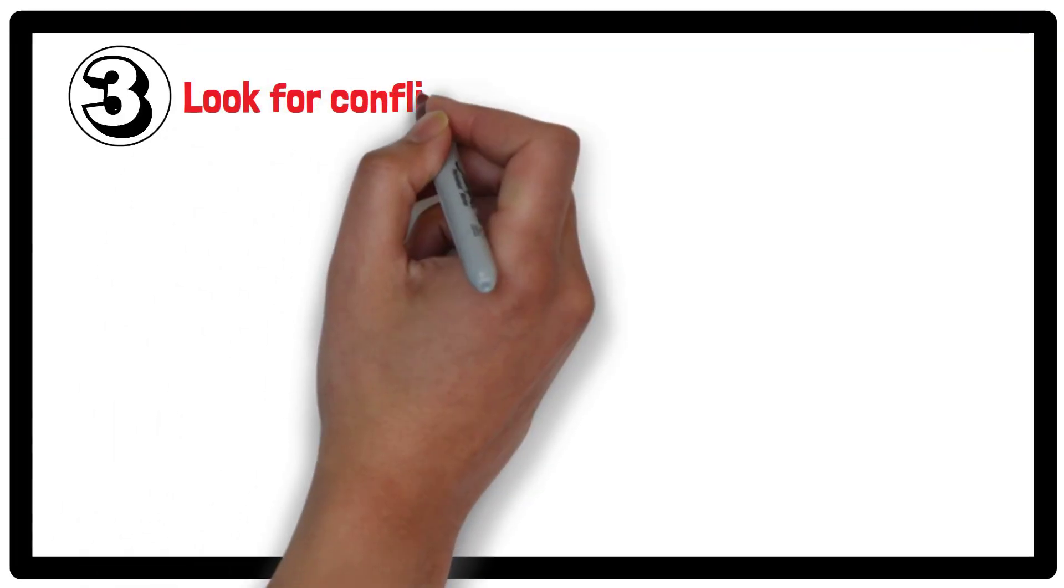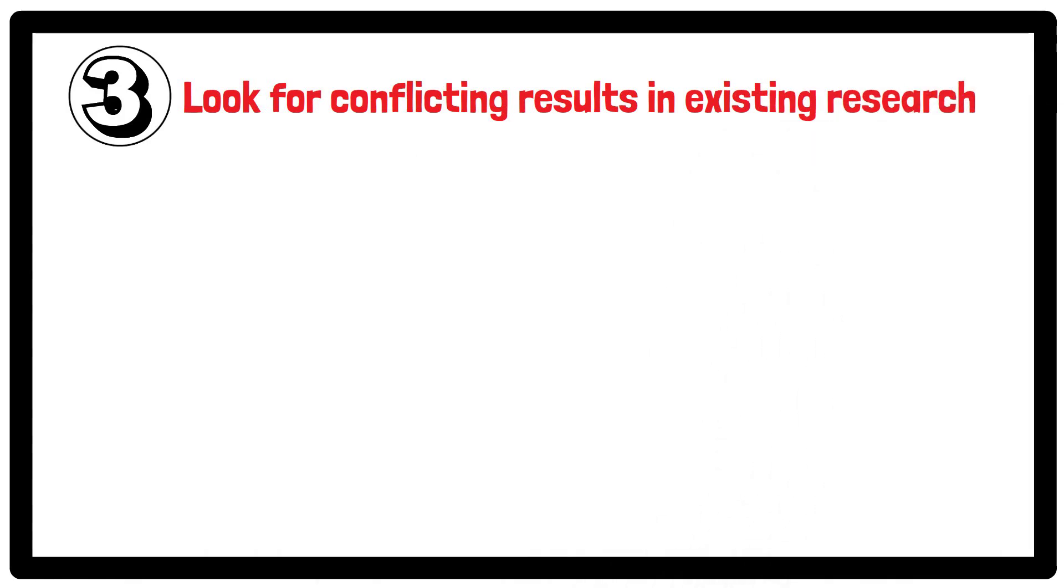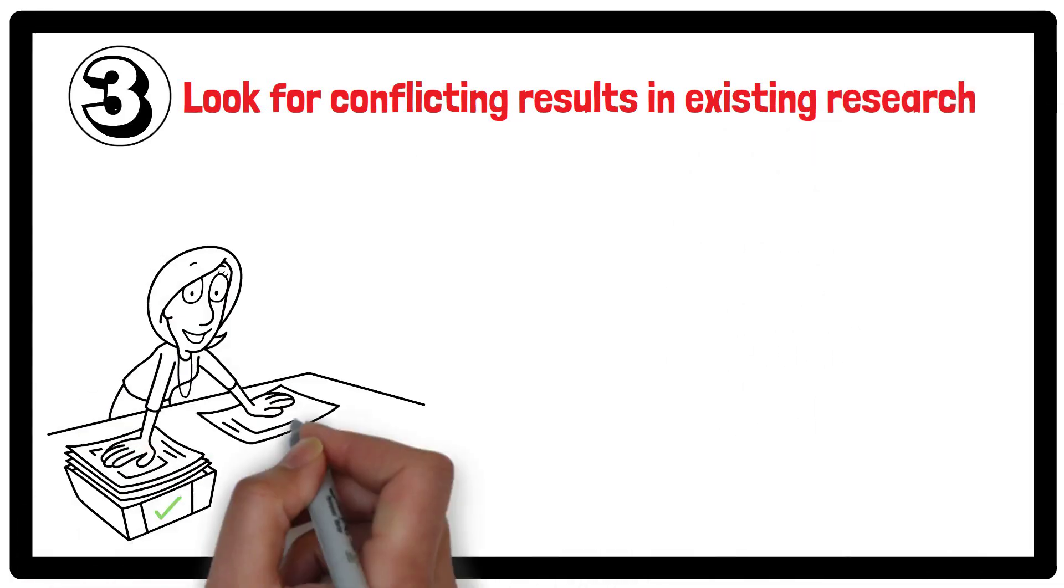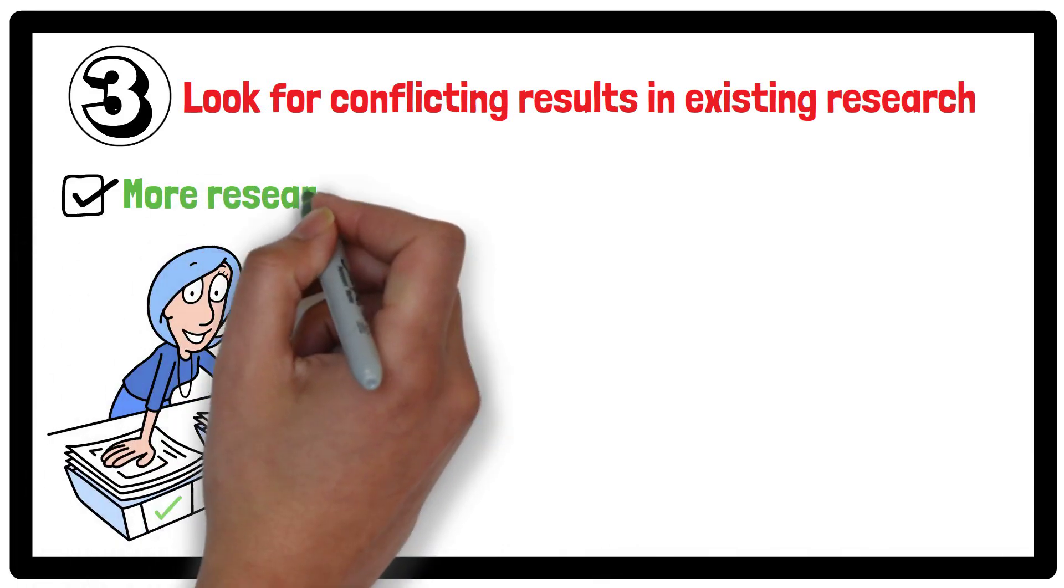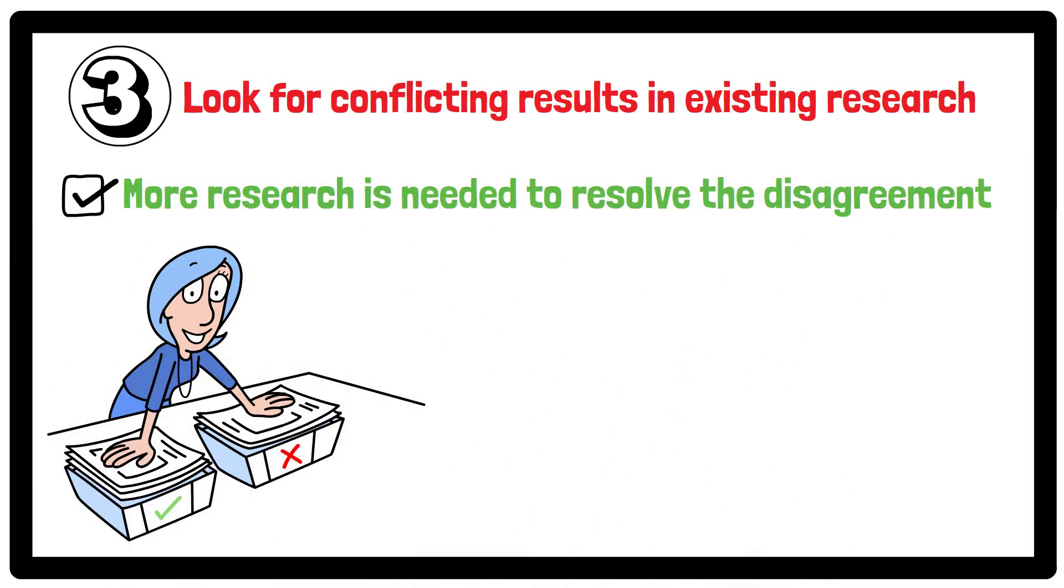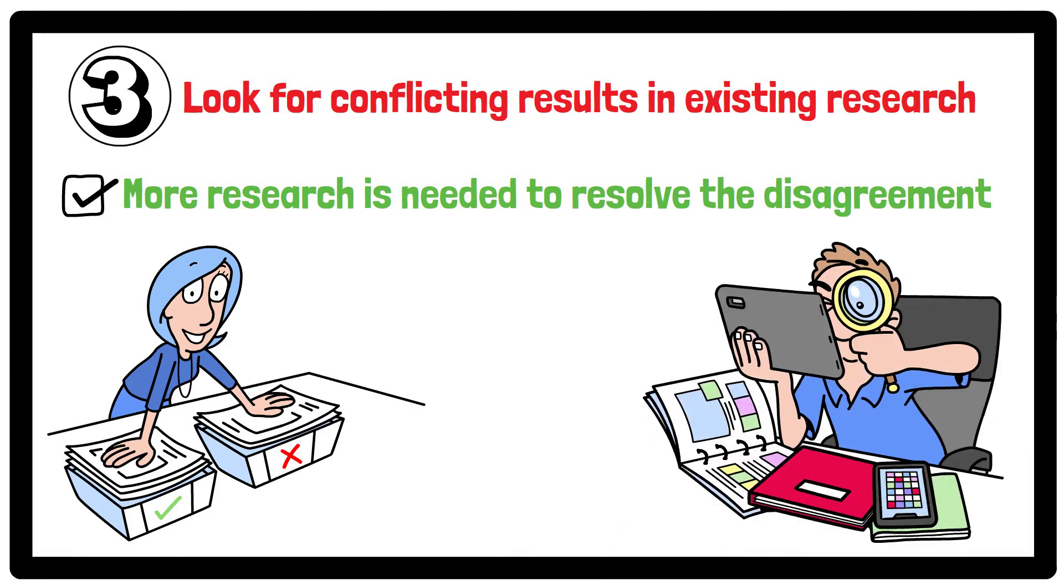Thirdly, look for conflicting results in existing research. Sometimes studies will have different or contradictory findings. These inconsistencies might indicate that more research is needed to resolve the disagreement or explore why the results are conflicting.